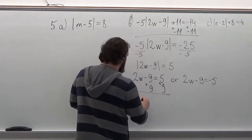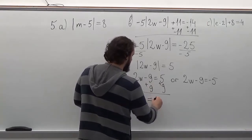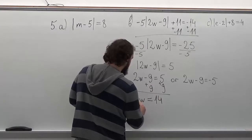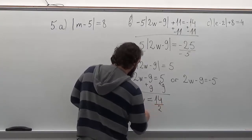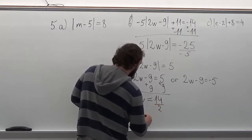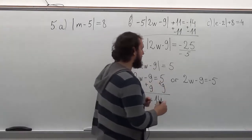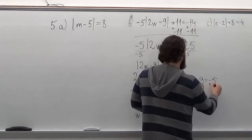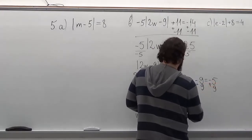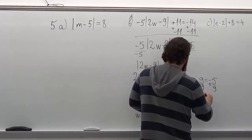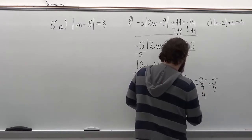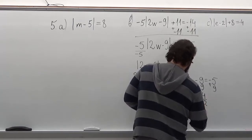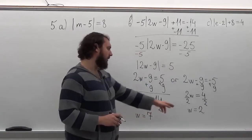We get 2w equals 14. And then we divide both sides by 2. In this part, we do the same — first we add a 9 to both sides, and then we divide both sides by 2. So we get answers of 7 and 2.